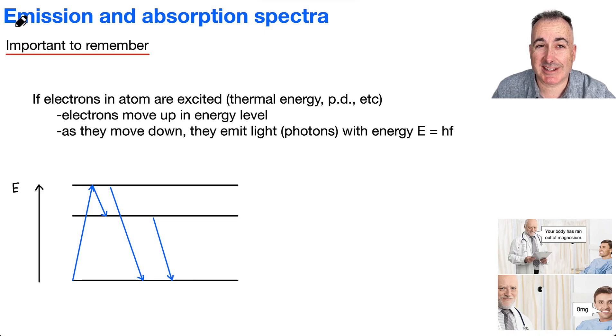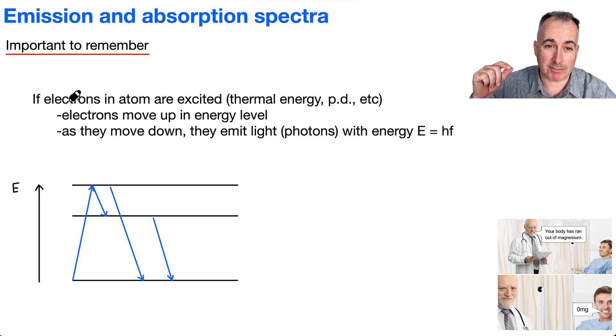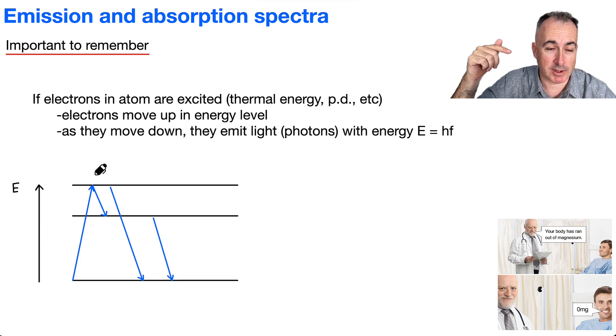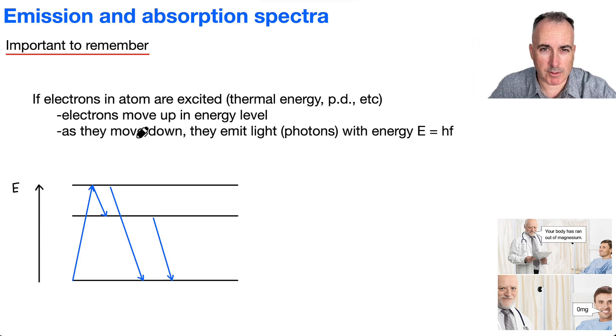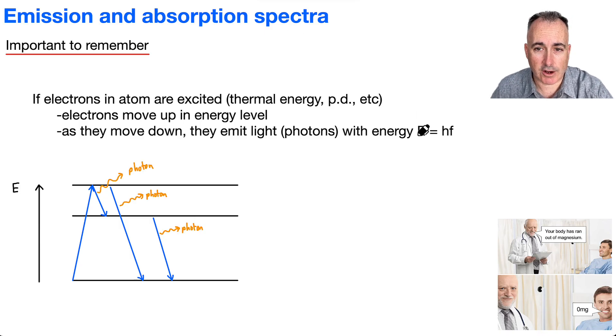So we'll talk about emission and absorption spectra. It's important to remember what you've learned before, that if the electrons in an atom get excited, maybe through thermal energy or through a potential difference, they move up in energy levels. And of course, they go down. Remember what happens when they go down - when they drop down, they emit photons. Each of these photons will have a slightly different wavelength or frequency. Remember that each of these photons has this energy E equals HF. This is what we've learned before.